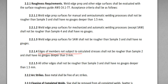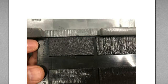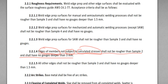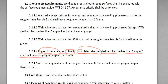Edges of members not subject to calculated stresses shall not be rougher than sample 2 and shall have no gouges deeper than 3 millimeters. So, this edge of members not subject to calculated stress — this is the only cut surface you can see in CWI Part B questions. You are not able to figure out the calculated stress from the specimen, but the question tells you whether this member is subjected to calculated stresses or not. This is given — the given condition from the question. So you don't have to worry about that.